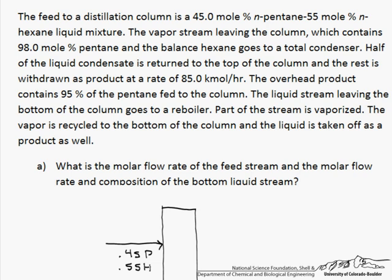The vapor stream leaving the column, which contains 98 mole percent of the pentane and the balance hexane, goes to a total condenser.